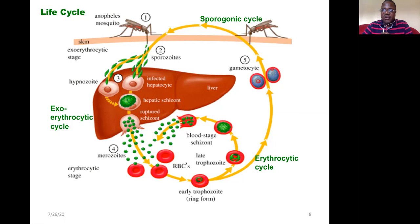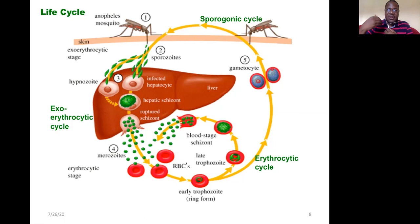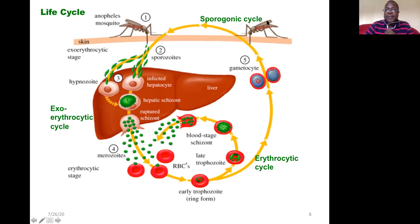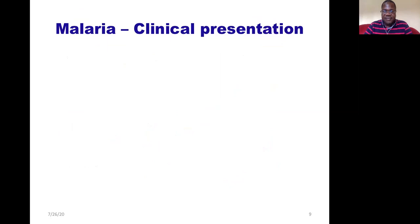While taking a blood meal, the mosquito takes up the gametocytes. Inside the mosquito's stomach, the gametocytes go through different stages and mature to become sporozoites, which migrate to the salivary gland. When that mosquito bites another human host, it transmits the infection again. The cycle occurring inside the mosquito is called the sporogonic cycle. This is how malaria transmission takes place.